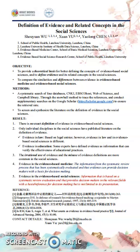Currently, there are many different definitions of evidence in different sciences, such as health science, social science, and thinking science. Because of the rapid development of evidence-based science, people are gradually developing a new understanding and thinking about evidence. Social science also needs to constantly produce, synthesize, implement, and evaluate evidence.